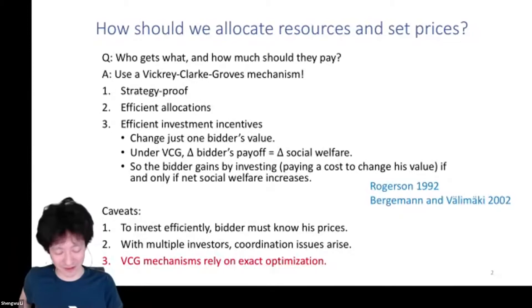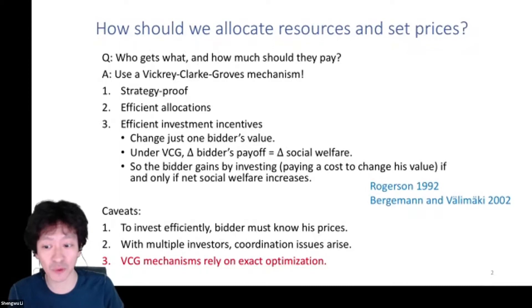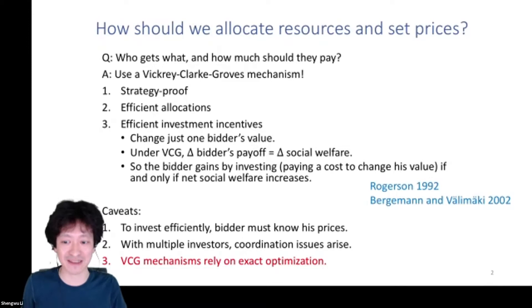This starts from a really basic question in economics: how should we allocate resources and set prices? We've got constrained resources we want to allocate — who should get what and how much should they pay? And there's a clean classical answer to this that sometimes works, which is we should use a Vickrey-Clarke-Groves mechanism.